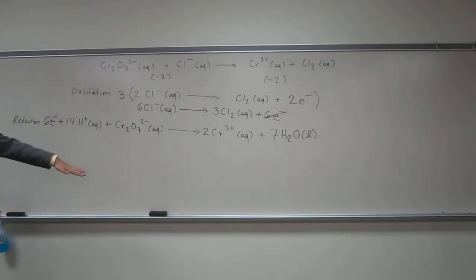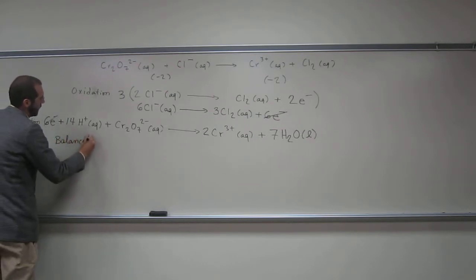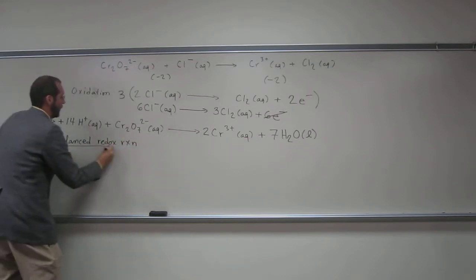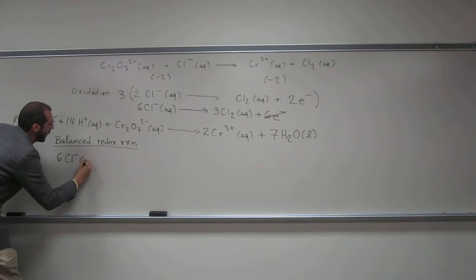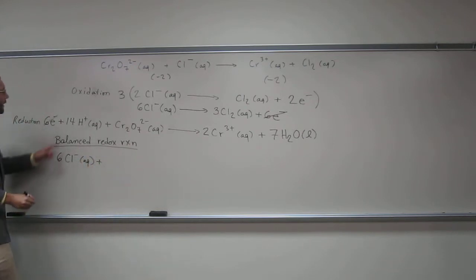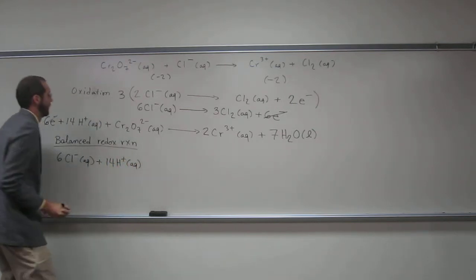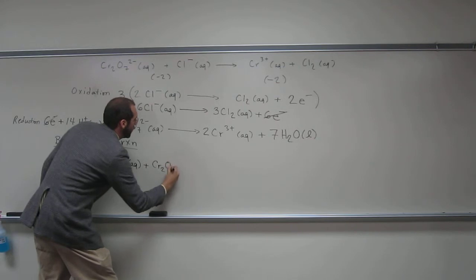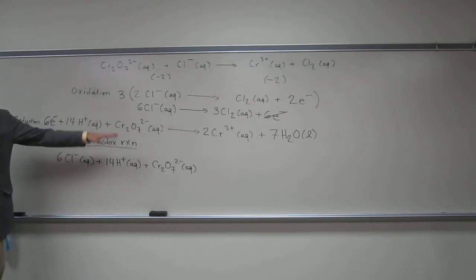Now all we do is add everything up to give us our balanced redox reaction. The balanced redox reaction is going to be: 6 Cl⁻(aq) + 14 H⁺(aq) + Cr₂O₇²⁻(aq) going to products. Do you guys see where I got all that from?